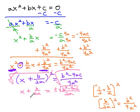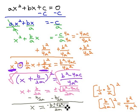And we can finally get the x alone by subtracting b over 2a from both sides. And we're left with x equals, we've got a common denominator of 2a, and in the numerator, the opposite of b plus or minus the square root of b squared minus 4ac.